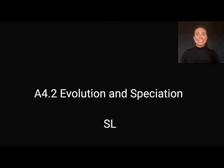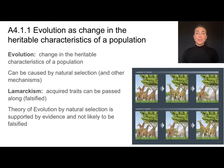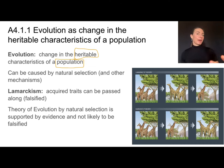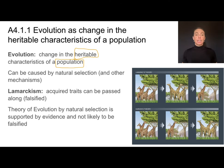In this video we'll be discussing 4.2 on evolution and speciation. This is part of the standard level or core content. One way to describe evolution is a change in heritable characteristics in a population, and those are two important parts of that definition — they need to be things that can be passed on to offspring, and we're talking about an entire population, not one individual.